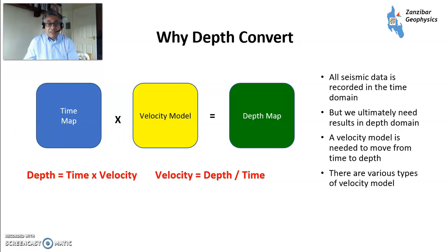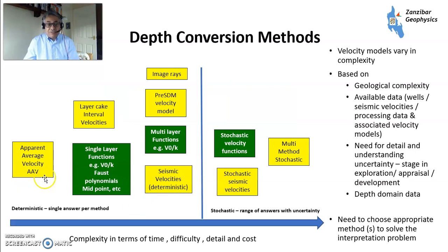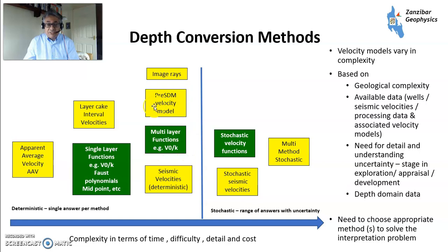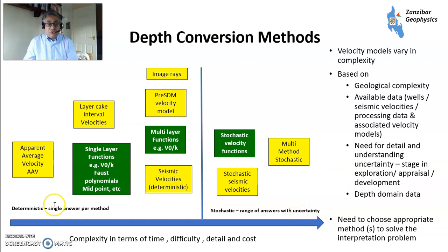There are different ways of doing that, some complicated, some simple. What we have here is a graph of different seismic velocity methods. The ones I'm going to talk about are the ones in green, which are the V0K and other functions, both single layer and multilayer, and also a little bit about stochastic functions. Methods going in this direction are more complicated, take more time, and may need specialist software or a specialist contractor. So you need to choose the right function for the right result.